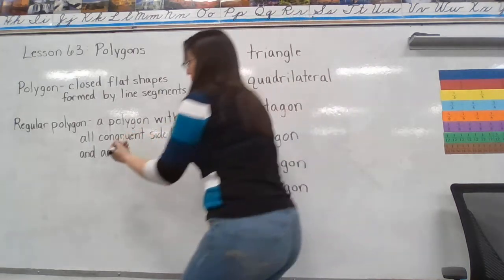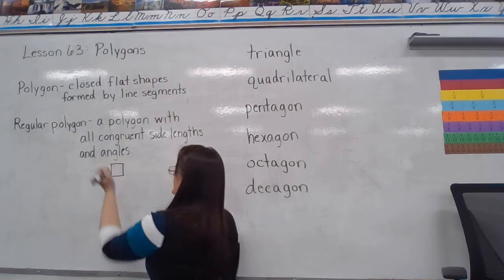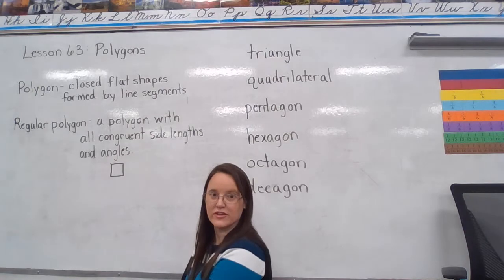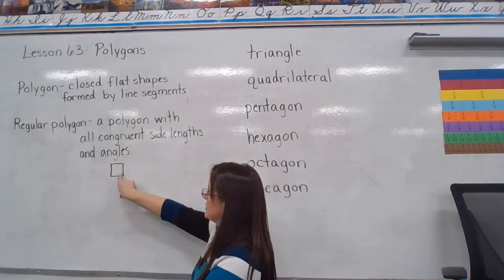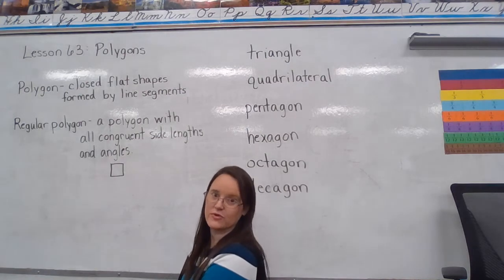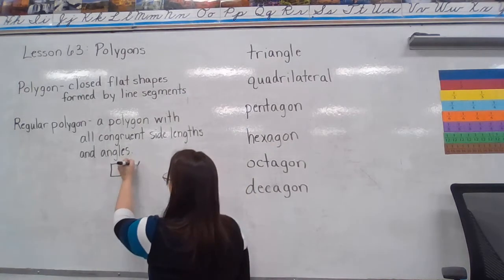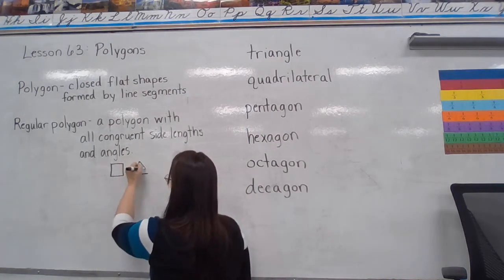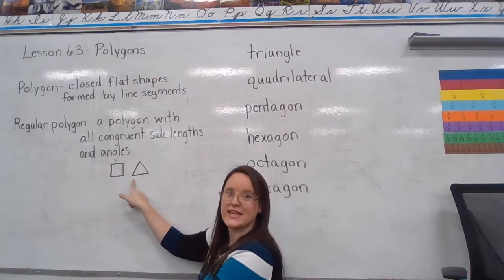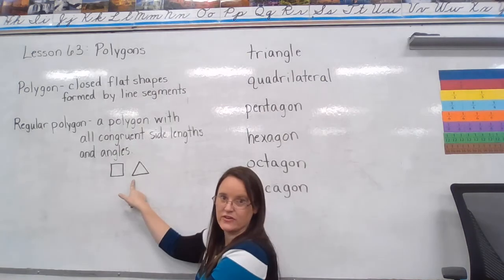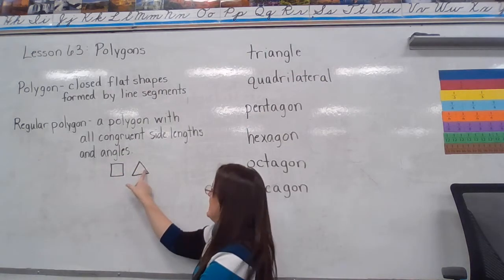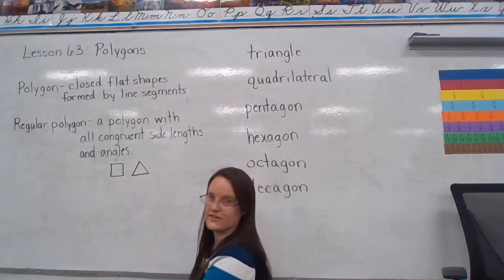Regular polygons are things like squares, because a square has four sides that are all congruent, and the angles are all the same — they're congruent as well. This particular type of triangle is a regular triangle. It has three sides that are the same, and three angles that are the same.